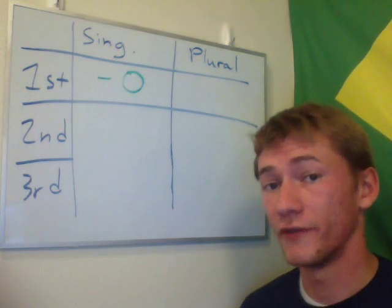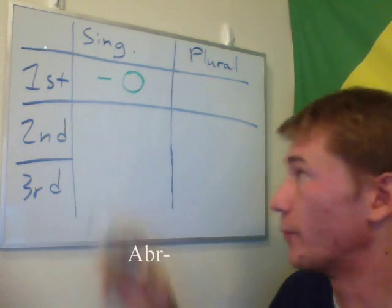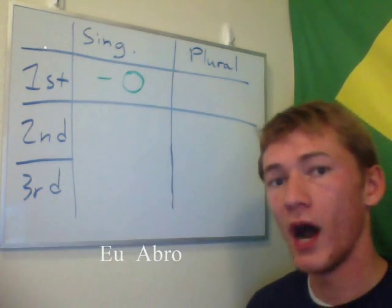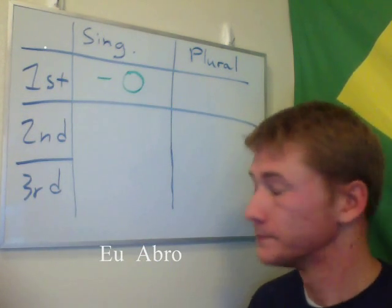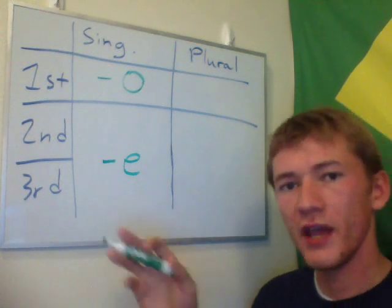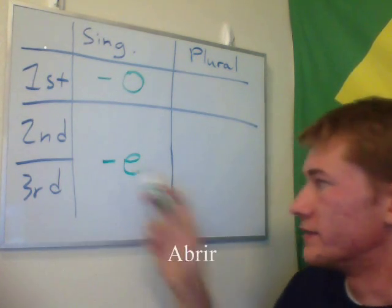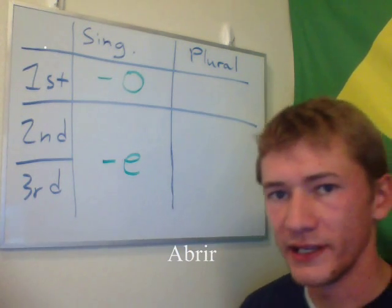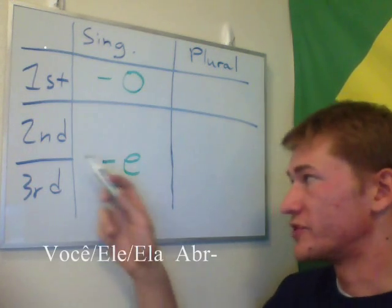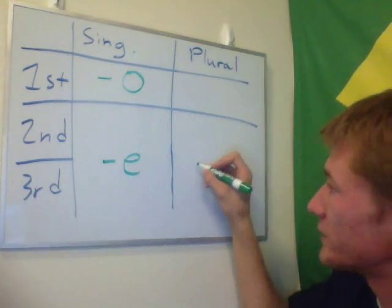For instance, for the unconjugated verb abrir, the conjugated form in the first singular is eu abri. Now for você, ele, and ela, it is the same as it is in the ER endings, which is E. So it would be você abri, ele abri, and ela abri.